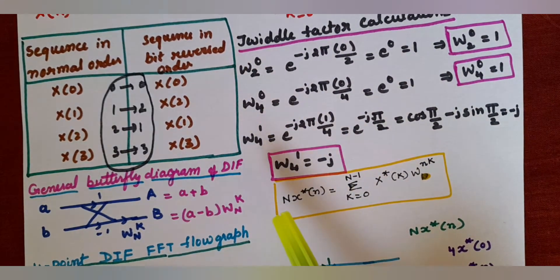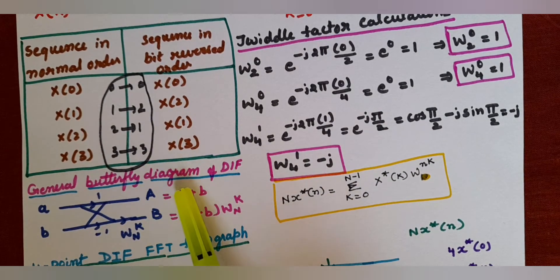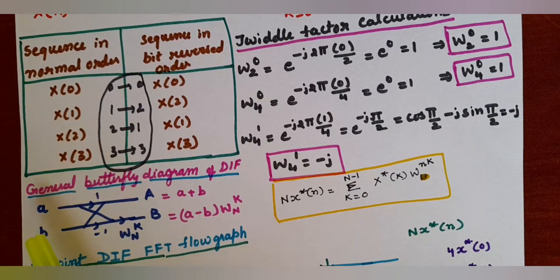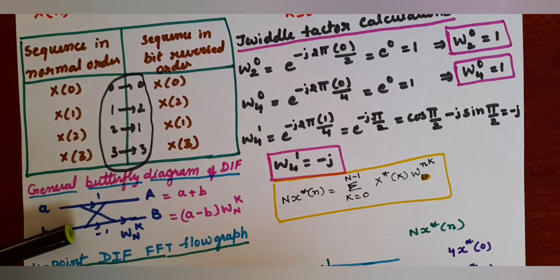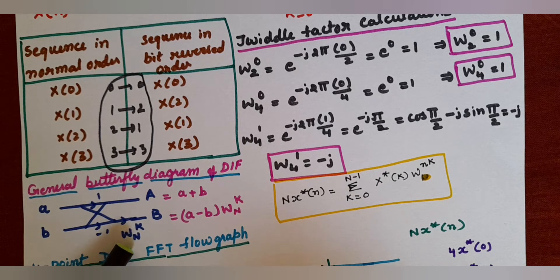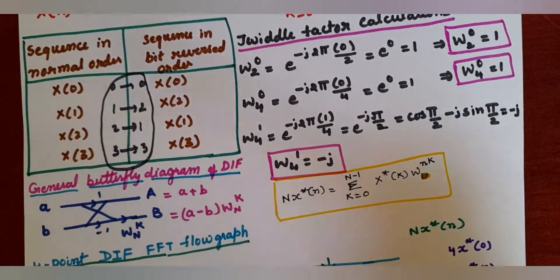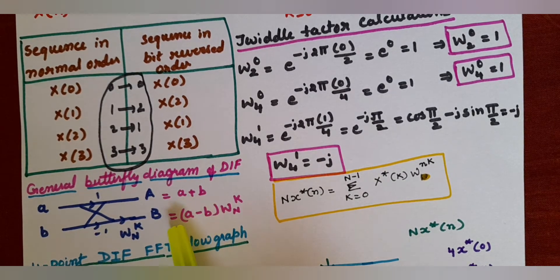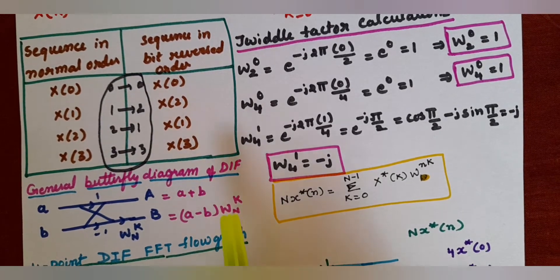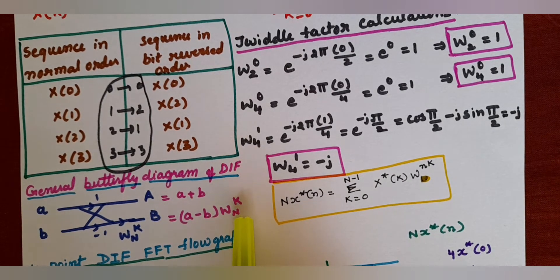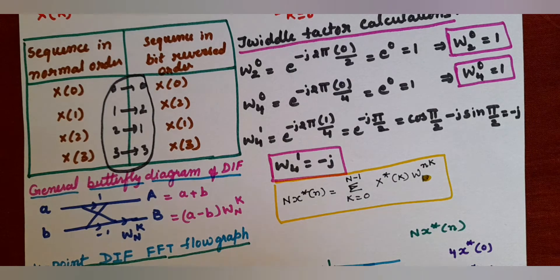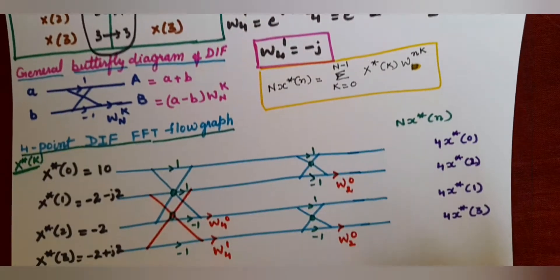After twiddle factor calculations, recall the general butterfly diagram of DIF. In the butterfly diagram, small a and small b are the inputs; capital A and capital B are the outputs. The twiddle factor W_N^k is written at the end of the second (bottom) line. The top line output equation is A = a+b, and the bottom line output equation is B = (a-b) × W_N^k.